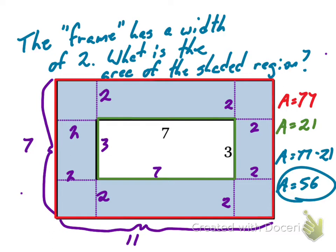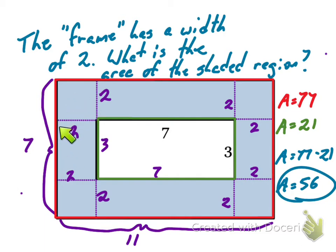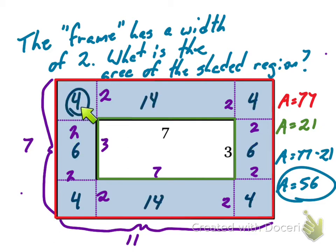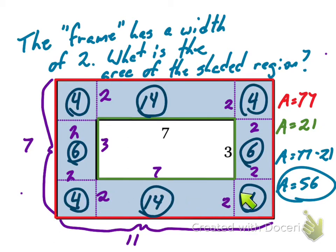One thing you could have done, like in the previous problem, is think of it as an addition problem and calculate the area of all the little rectangles. We have four, six, four, fourteen, four, six, four, fourteen. If we add all these up — fourteen plus fourteen is twenty-eight, that's thirty-eight, forty-eight, fifty-two, and fifty-six. So it all adds up to fifty-six. Check and make sure my math is right.